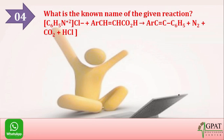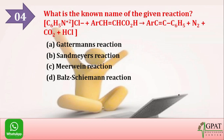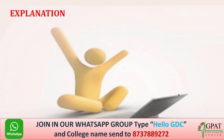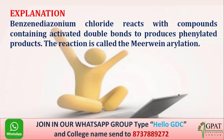The next question asks for the name of a given reaction. The options are: option A: Gattermann's reaction, option B: Sandmeyer's reaction, option C: Meerwein reaction, option D: Balz-Schiemann reaction. The correct answer is Meerwein reaction.